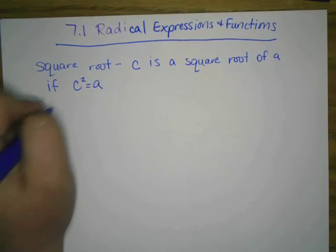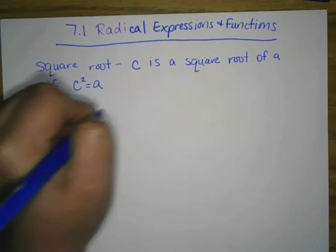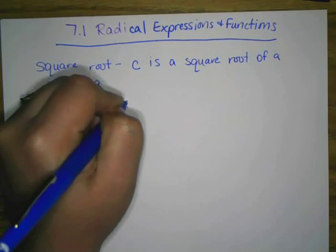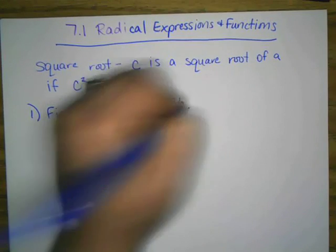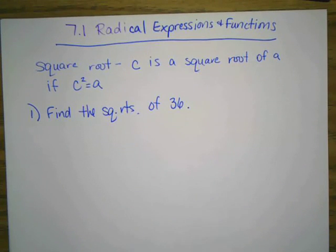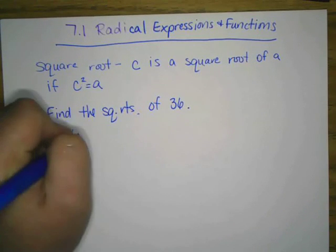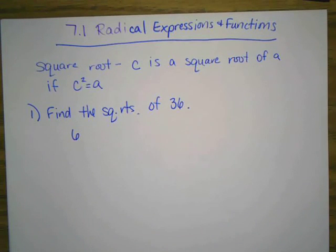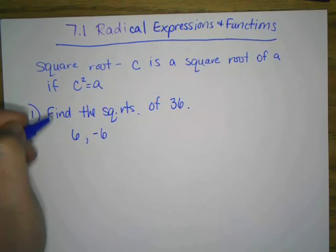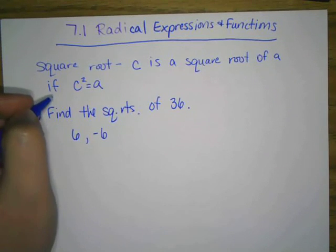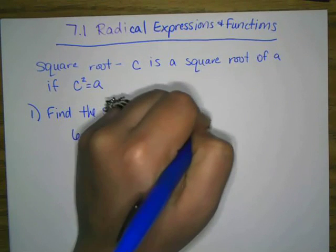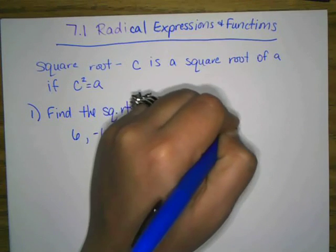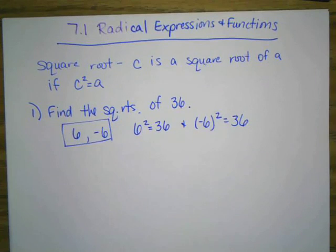So first question says find the square roots of 36. Well, what squared is 36? You know 6 squared is 36, and you should know one other number, and that is negative 6. Because negative 6 times negative 6 is 36. So 6 squared equals 36, and the quantity negative 6 squared equals 36. So those are the square roots of 36.